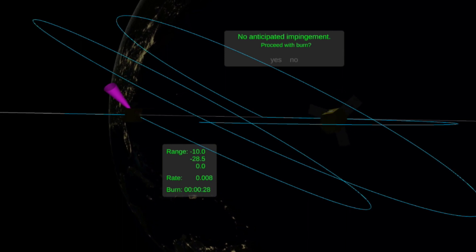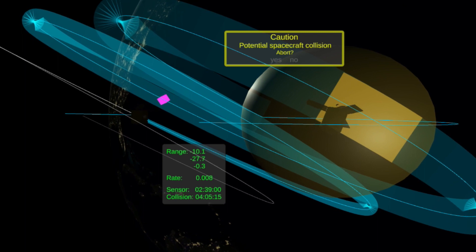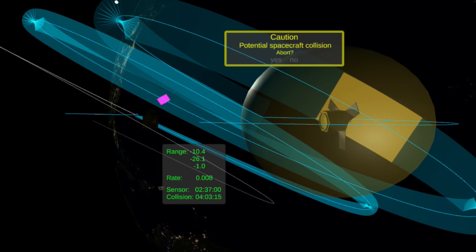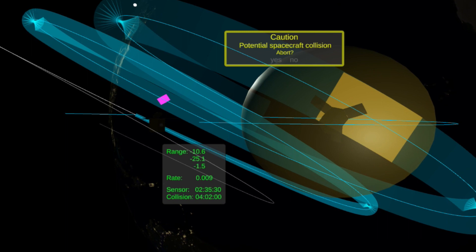We are approaching this burn right now, and there are some uncertainties associated with the burn, leading to an uncertainty in the future orbit, seen in this light blue cone that's propagating around our nominal orbit. There are also uncertainties in the target satellite, which is this yellow ellipsoid, which will lead to a potential collision, which alerts and notifies us.